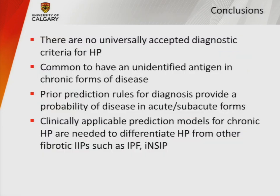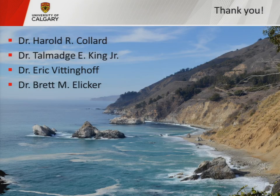In conclusion, there are no universally accepted diagnostic criteria for HP. It is common to have an unidentified antigen in chronic forms. Prior prediction rules provide a probability of disease in acute and subacute forms. We really need to develop clinically applicable prediction models for chronic HP. Thanks to my mentors at UCSF for that project.